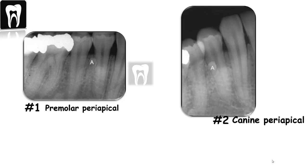Step number two: you must select two things that are visible on both images. We have a fixed or known object — that would be the mandibular first premolar — and then we have the unknown object, which is the supernumerary tooth.